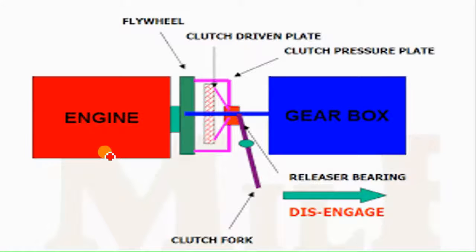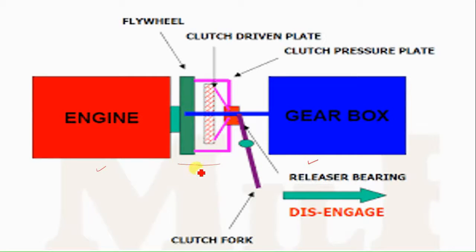Now we will see where the clutch is actually located. This is the engine and this one is the gearbox. In between the engine and gearbox there is a device — that is nothing but the clutch. This clutch is basically utilized for the on and off purpose of the power.